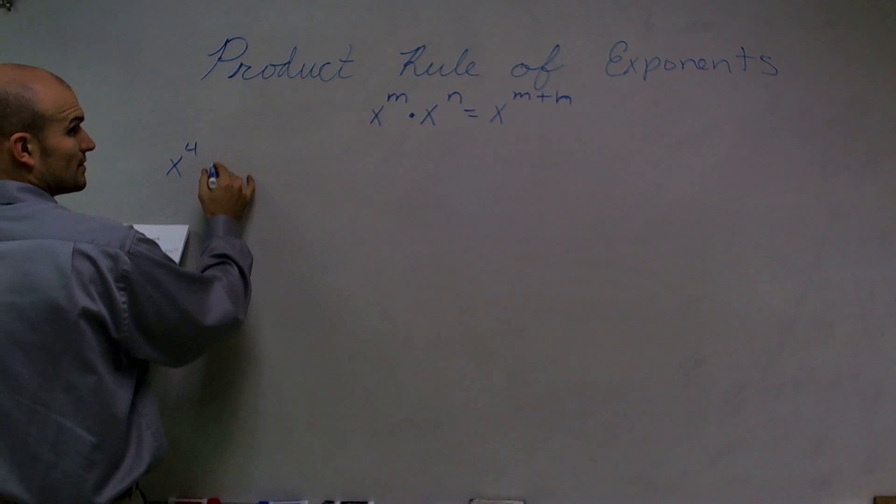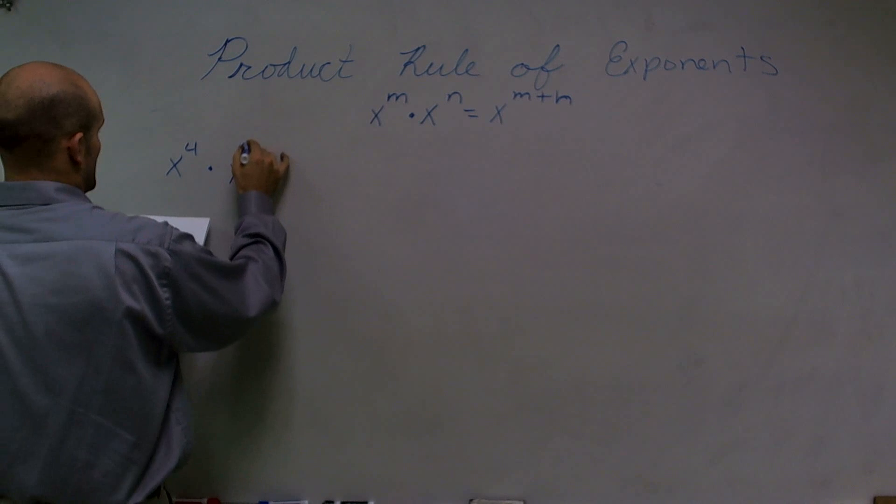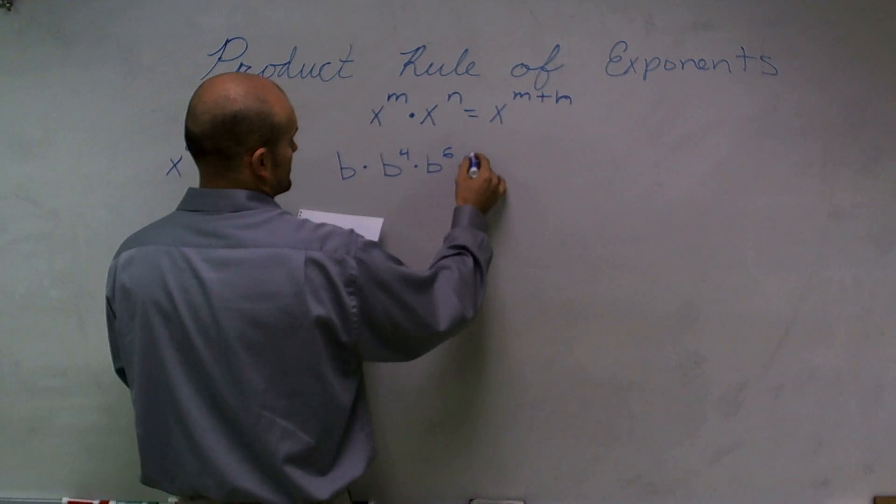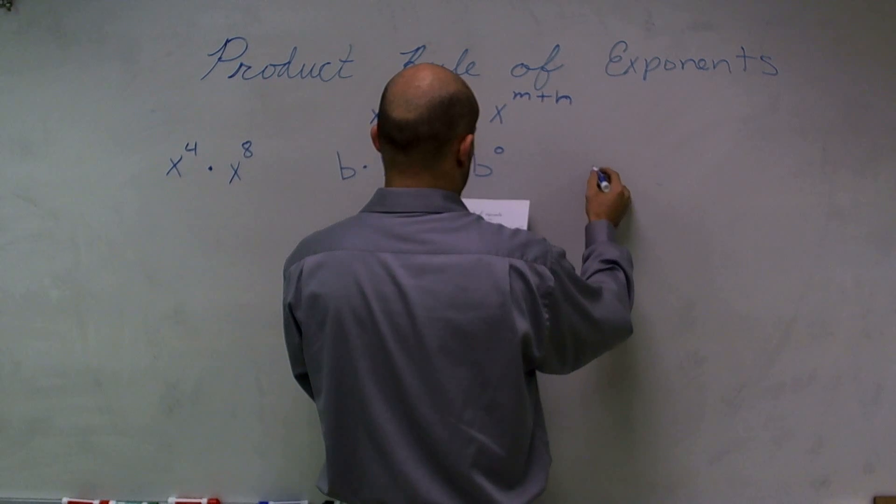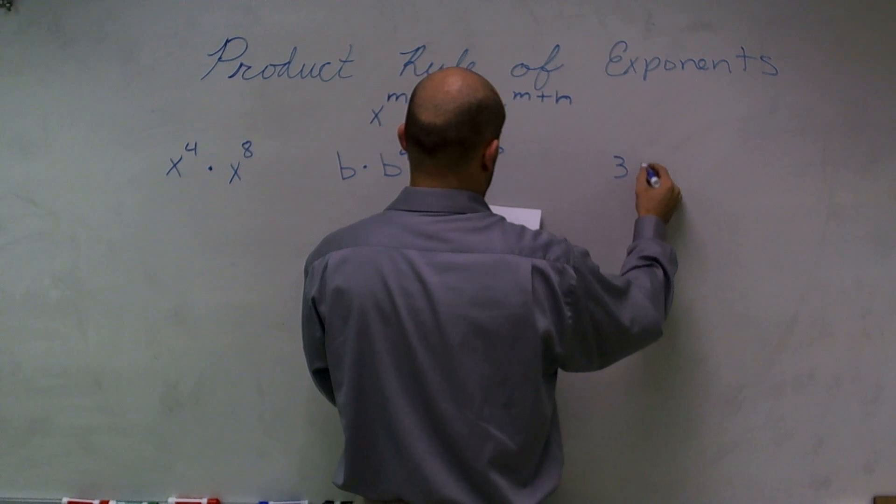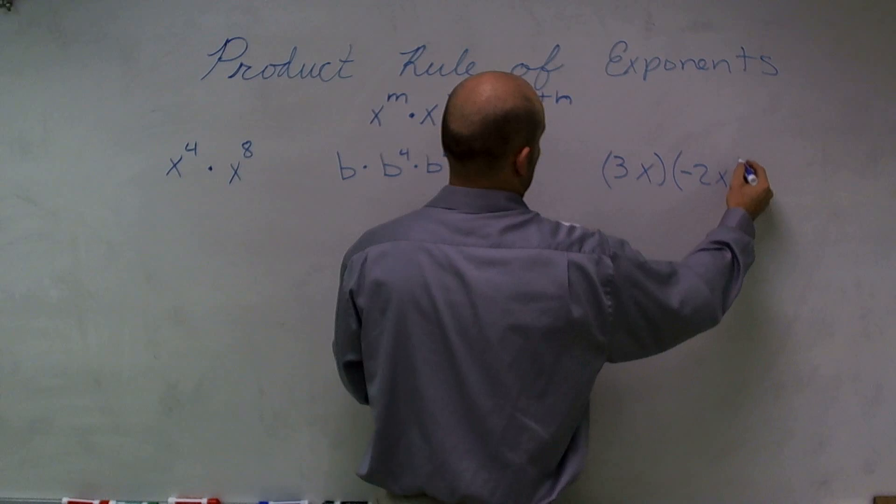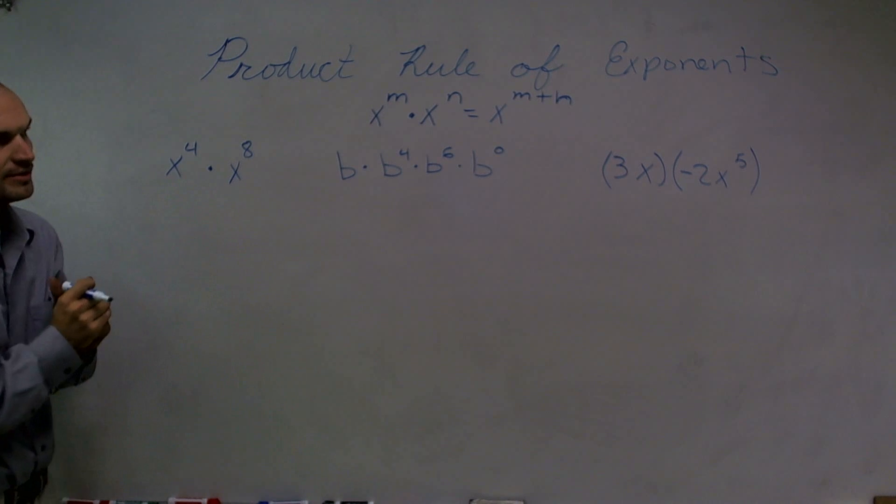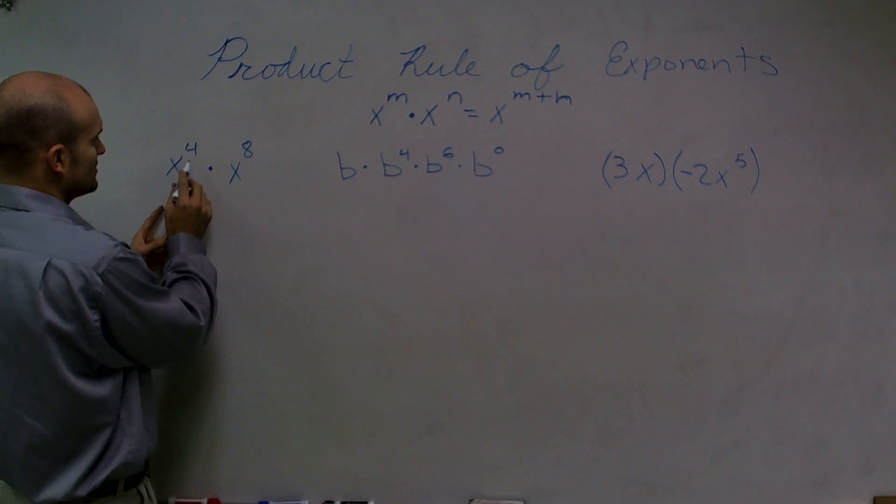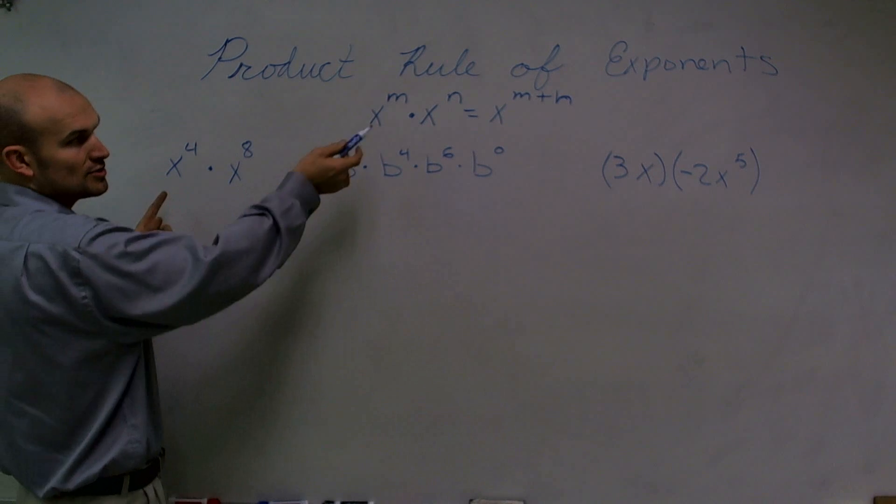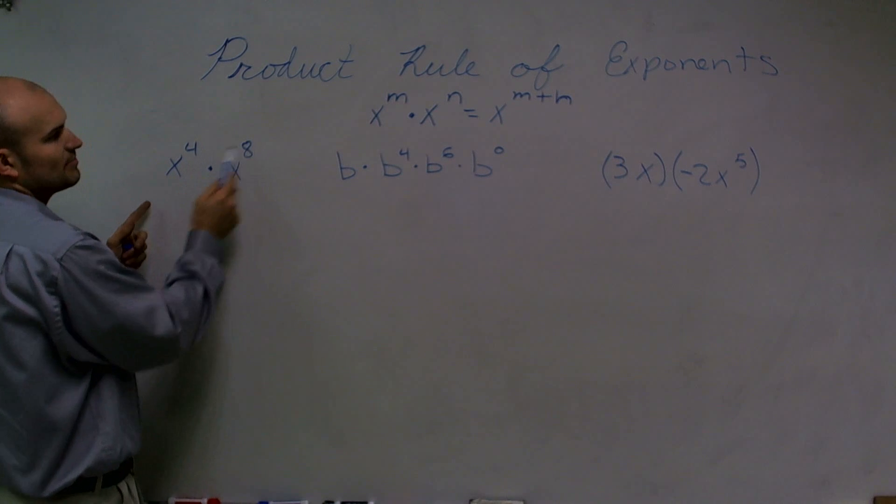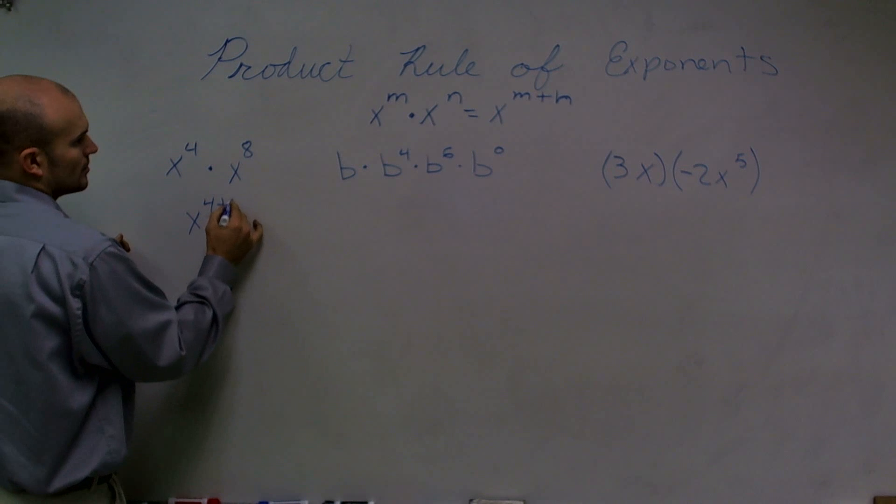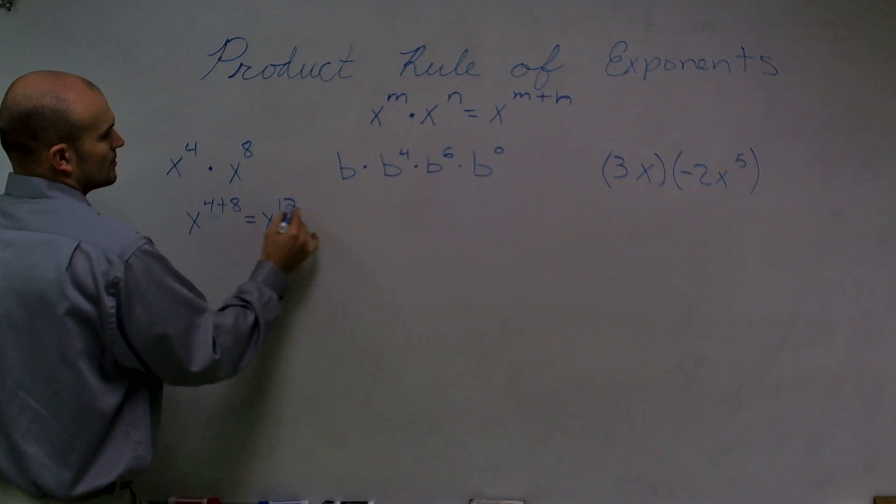So if I work through x to the fourth times x to the eighth, b times b to the fourth times b to the sixth times b to the zero. And then I work on, let's do 3x. So let's work on solving these three problems. Well, first of all here, it becomes pretty simple. If you look at it, I have my two exponents. My two bases are exactly the same. So therefore, I can use the product rule of exponents. And then all I need to simply do is just add my exponents. So this one is going to be x of 4 plus 8, which is going to equal x to the twelfth power.